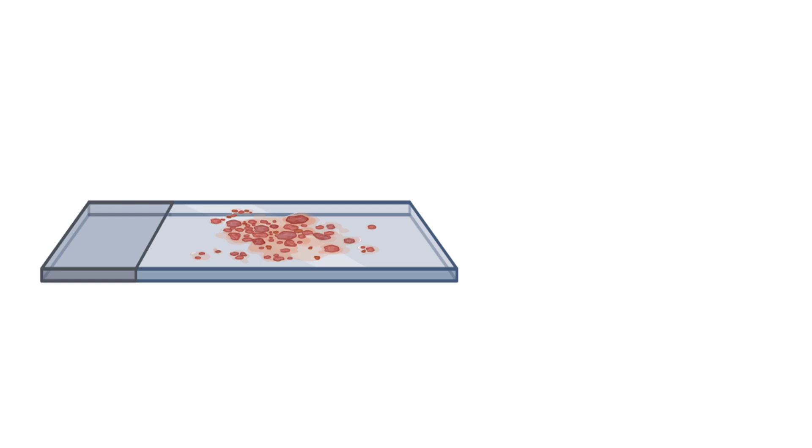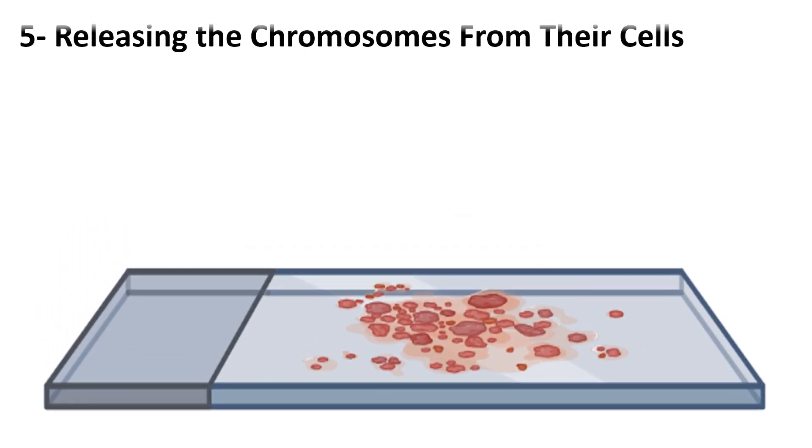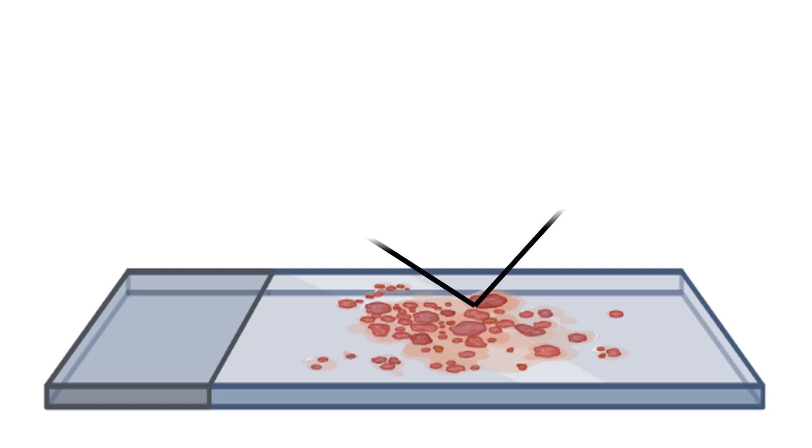The fifth step is releasing the chromosomes from their cells. In order to see these compact chromosomes under a microscope, the chromosomes have to be out of the white blood cells. This is done by treating the white blood cells with a hypotonic solution.